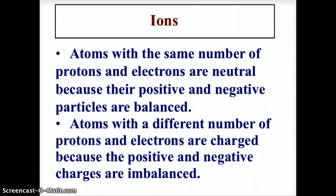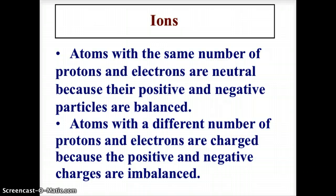Now let's talk about ions. Atoms with the same number of protons and electrons are neutral because their positive and negative particles are balanced. However, atoms with different numbers of protons and electrons are charged because the positive and negative charges are imbalanced. If there are more electrons it becomes a negative atom, and if there are more protons it becomes a positive atom.